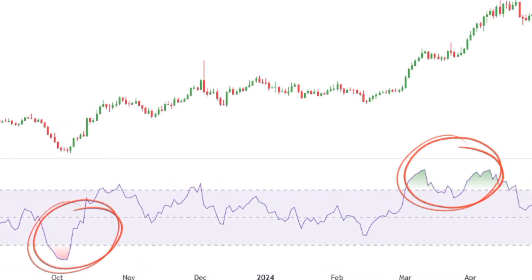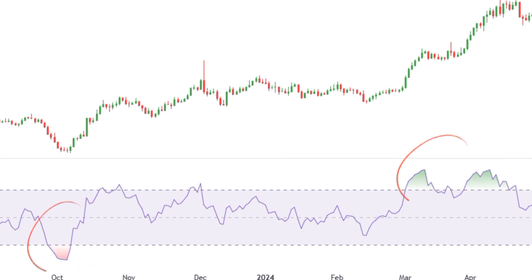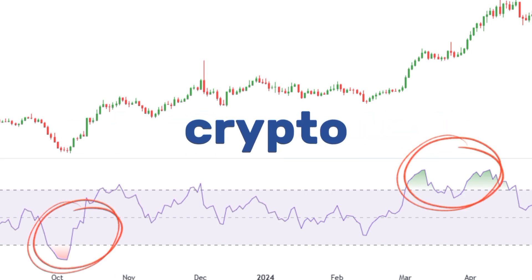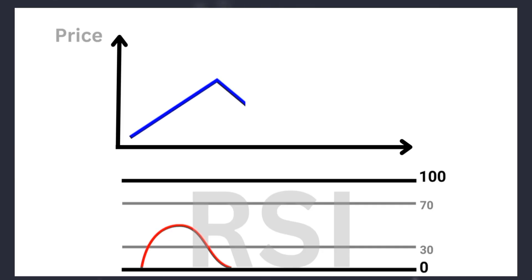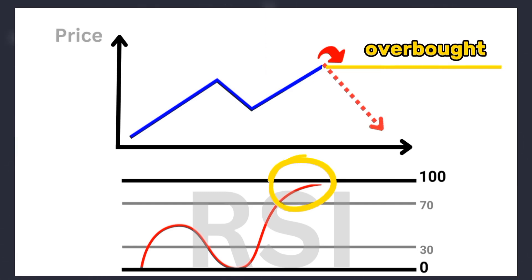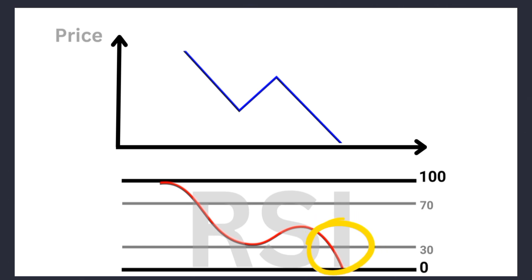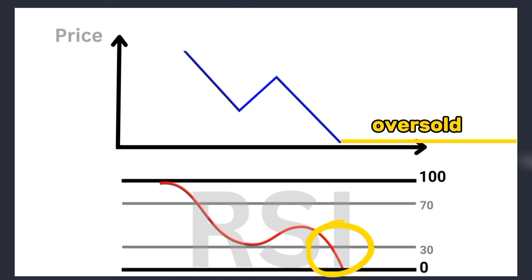One of the best tools to spot overbought and oversold zones in various markets — such as the stock market, forex, crypto, and commodities — is the RSI (Relative Strength Index). When the RSI goes above 70, it indicates that the market might be overbought and could be due for a price drop. Conversely, when the RSI falls below 30, it suggests the market might be oversold and ready for a potential bounce back.